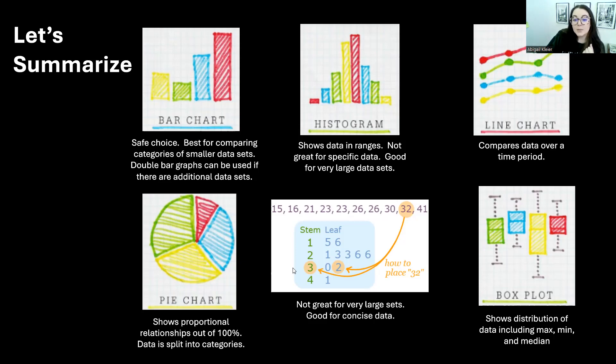Next, we have a stem and leaf plot. Stem and leaf plot is based on the place value. The tens value would be the stem. The ones value will be the different leaves. That is not good for very large sets of data. It's good for very concise data, numbers that are kind of similar to each other. It's not good for data that's widespread or very large. We don't use stem and leaf plots super often, but it's important that we know how to use them.